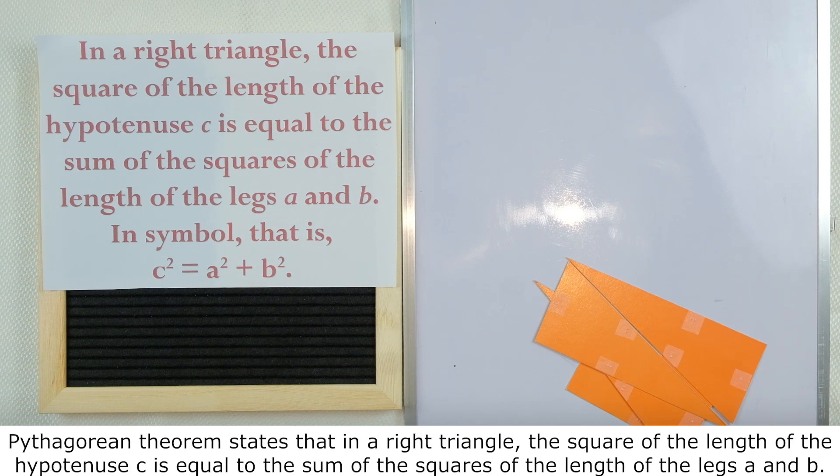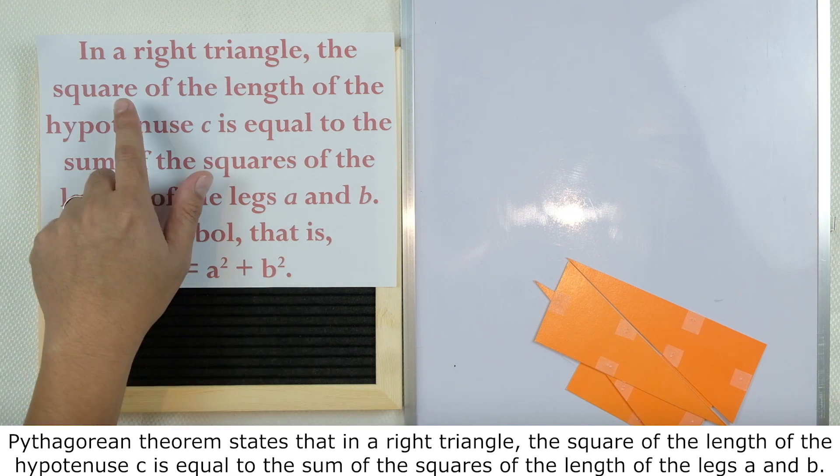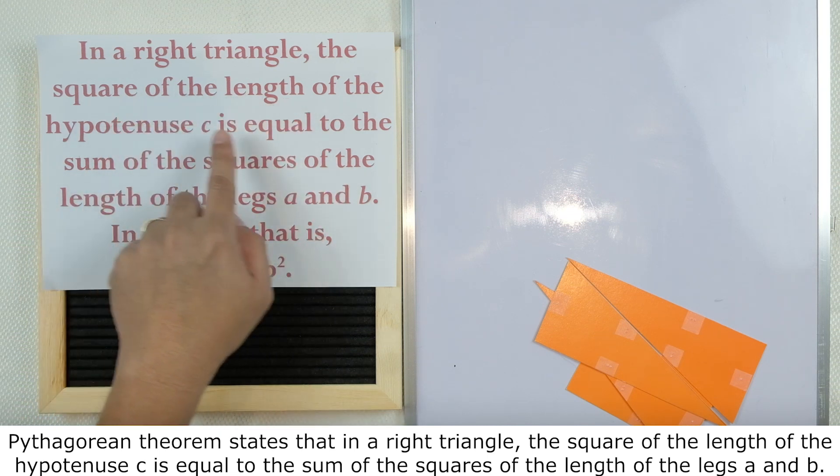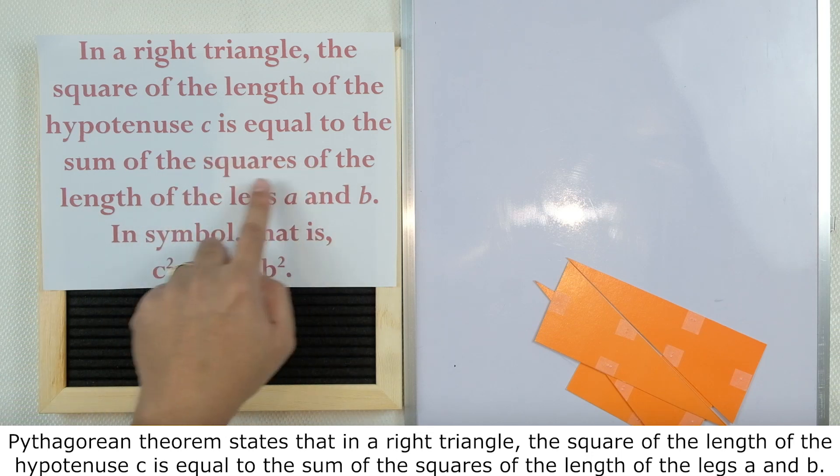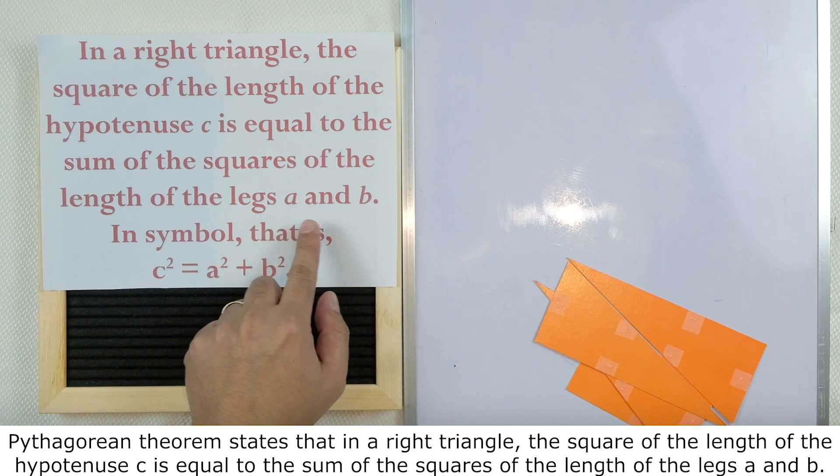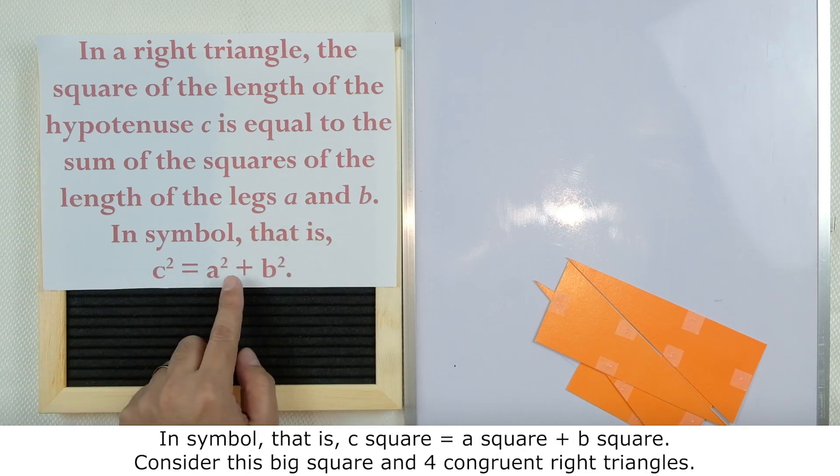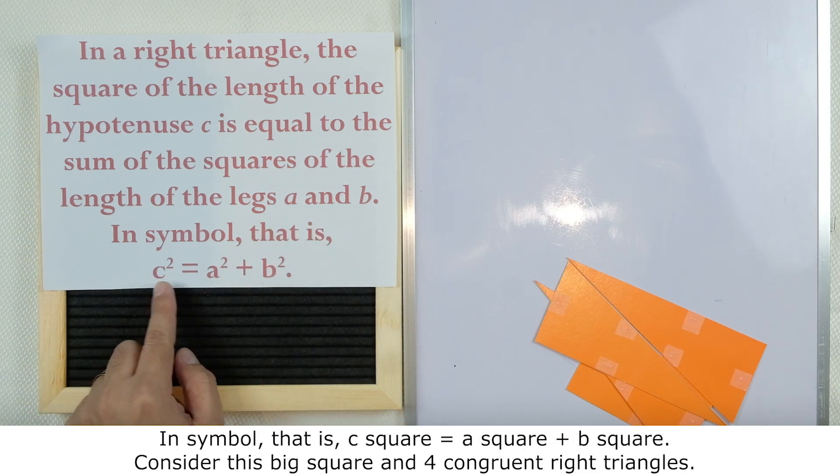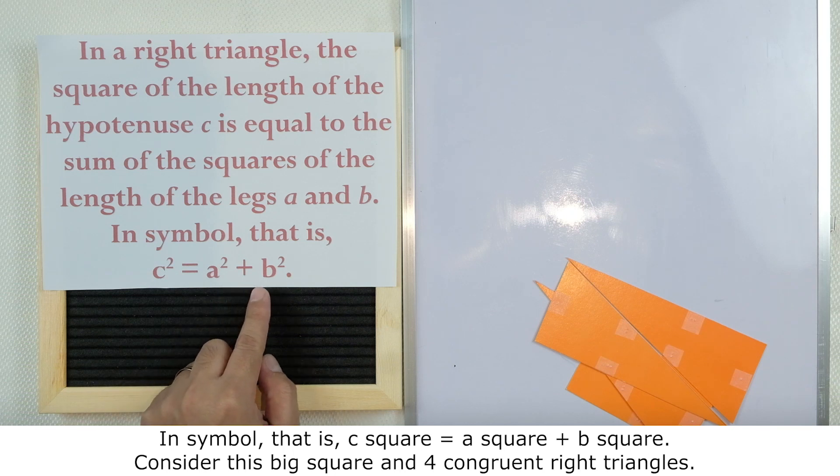Pythagorean Theorem states that in a right triangle, the square of the length of the hypotenuse c is equal to the sum of the squares of the length of the legs a and b. In symbol, that is c² = a² + b².